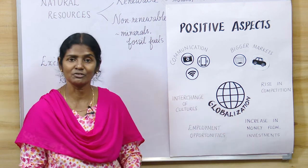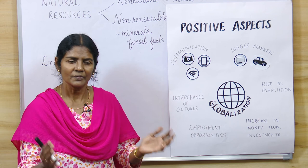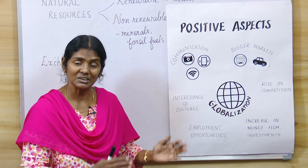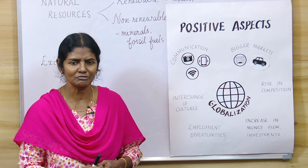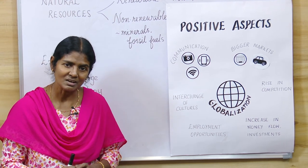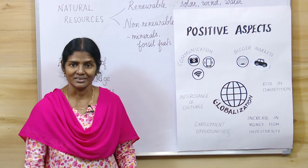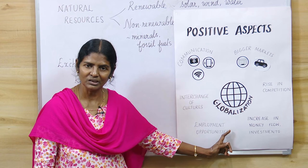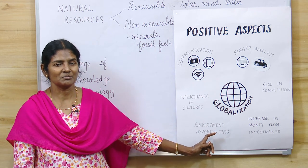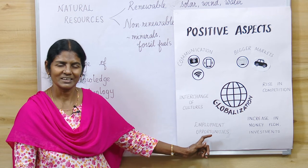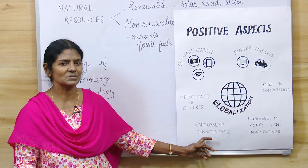Next we have increase in money flow. When investors see a nice area with good resources of water and electricity, they invest and build a big unit in that country. The industry flourishes and a lot of money is generated, so there is an increase in the flow of money. When such units are set up in different parts of the world, people who wouldn't have been employed otherwise get an opportunity — so there are a lot of employment opportunities. It benefits both the country that is investing and the country that provides the land.